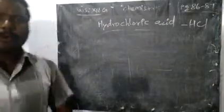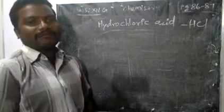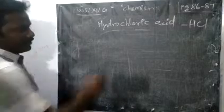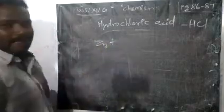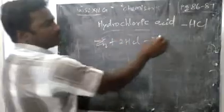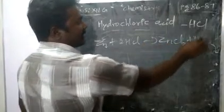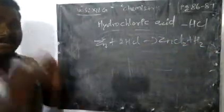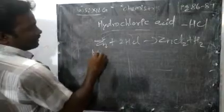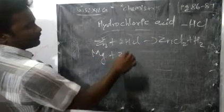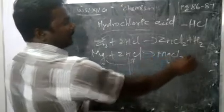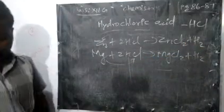Now we look at the chemical properties of hydrochloric acid and how it reacts with metals. Zinc reacts with 2 moles of HCl to give zinc chloride and hydrogen gas — as we know, acid with metal gives hydrogen gas. Similarly, magnesium reacts with HCl to form magnesium chloride along with hydrogen gas.